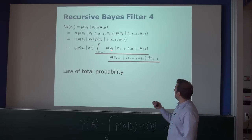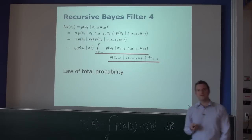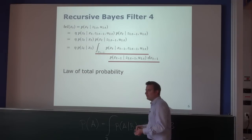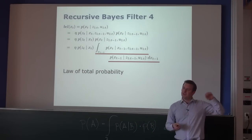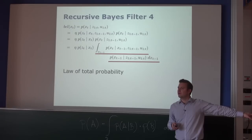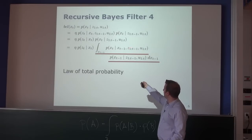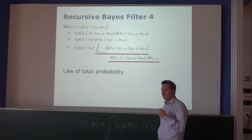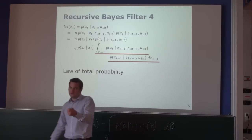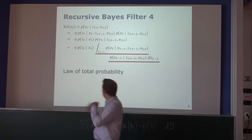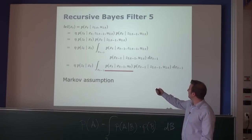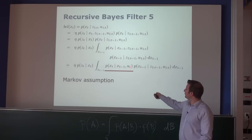Looking at the first term within the integral, we apply the Markov assumption again: if we are interested in estimating the current state of the world and given we know the previous state, everything seen or done before that time step is not relevant. So we can get rid of all previous observations and all commands except the last one U_T, because U_T is executed to go from x_{T-1} to x_T. This equation simplifies accordingly.